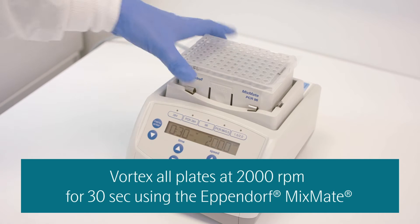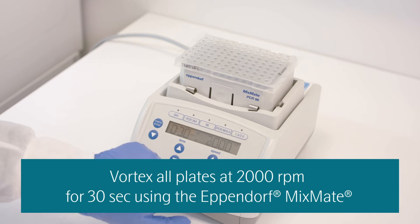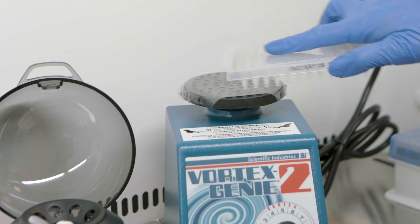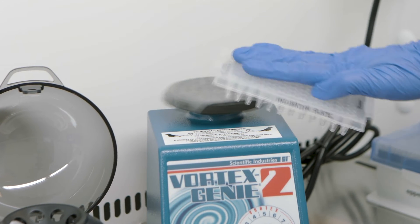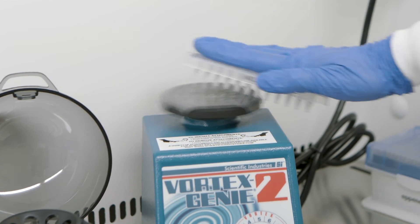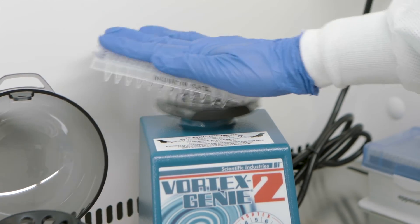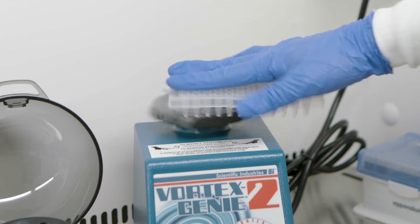Plate vortexing should be performed using the Eppendorf MixMate and the appropriate tube holder. This is required for the pre-PCR plate vortexing, but optional post-PCR. If manual plate vortexing is used post-PCR, it must be done using the technique shown here. Please watch the Olink vortexing technique video before continuing.